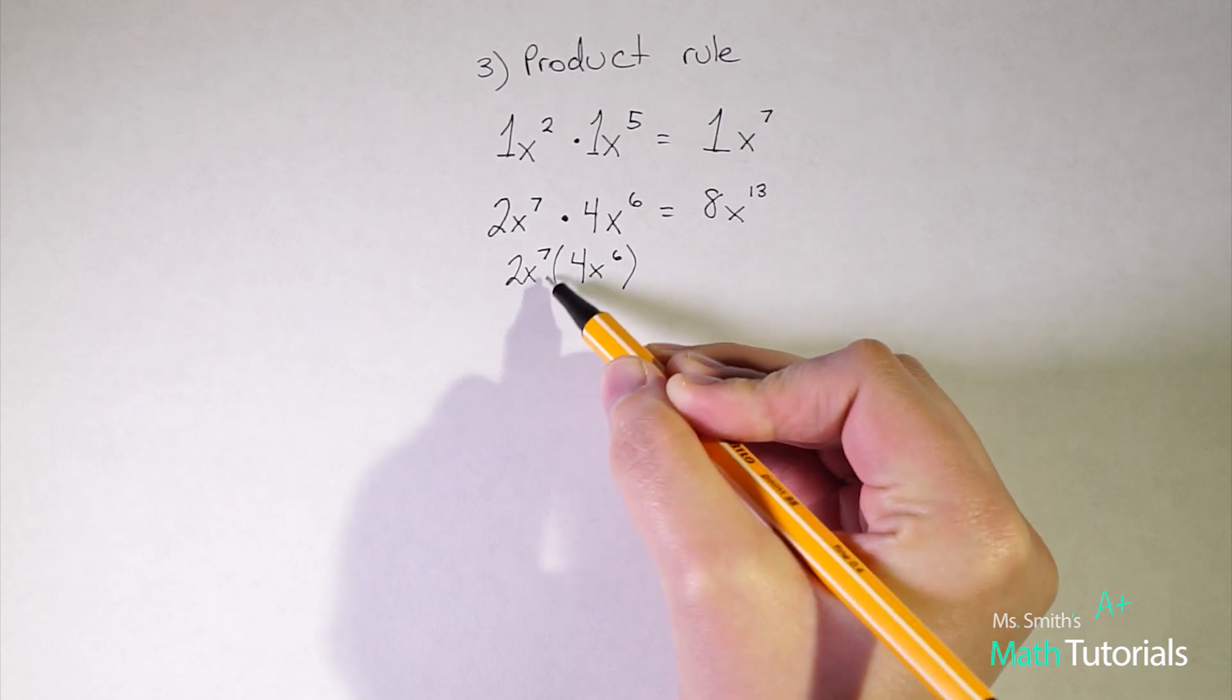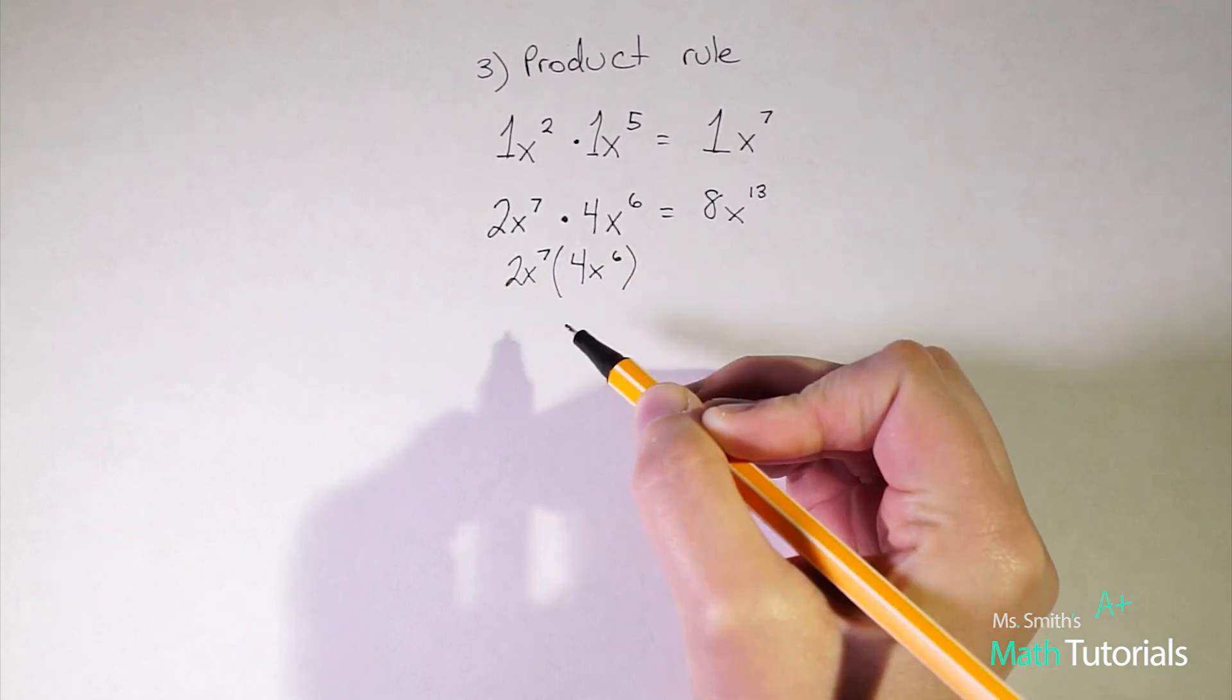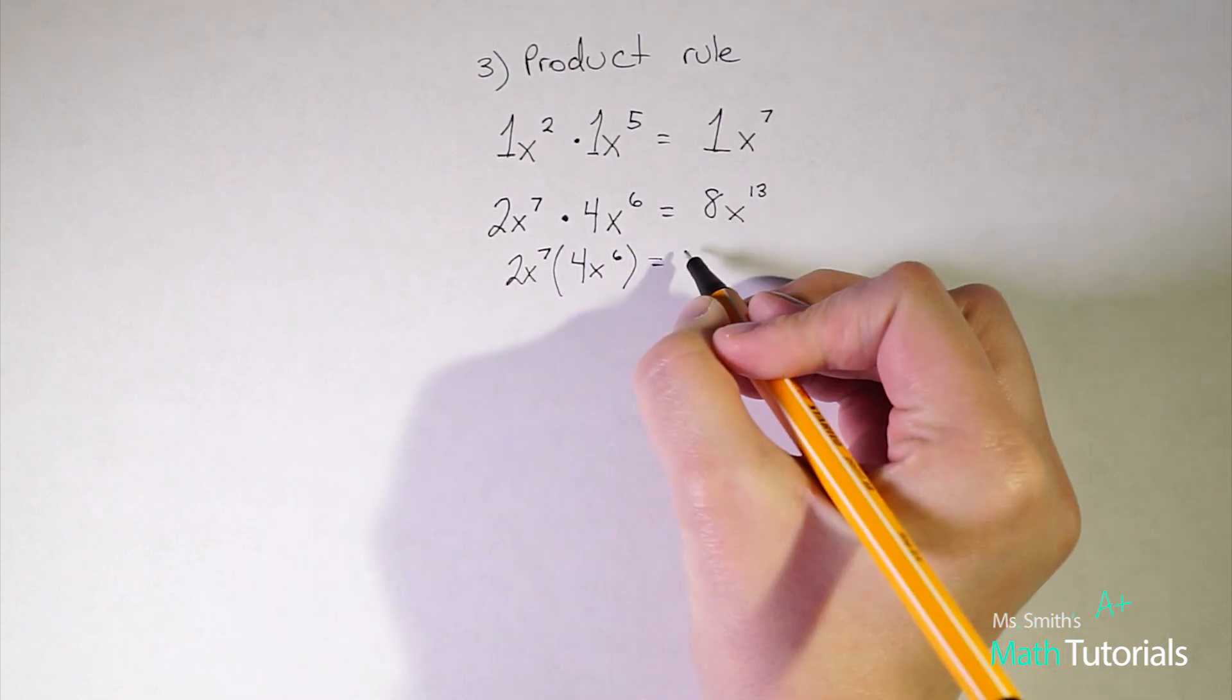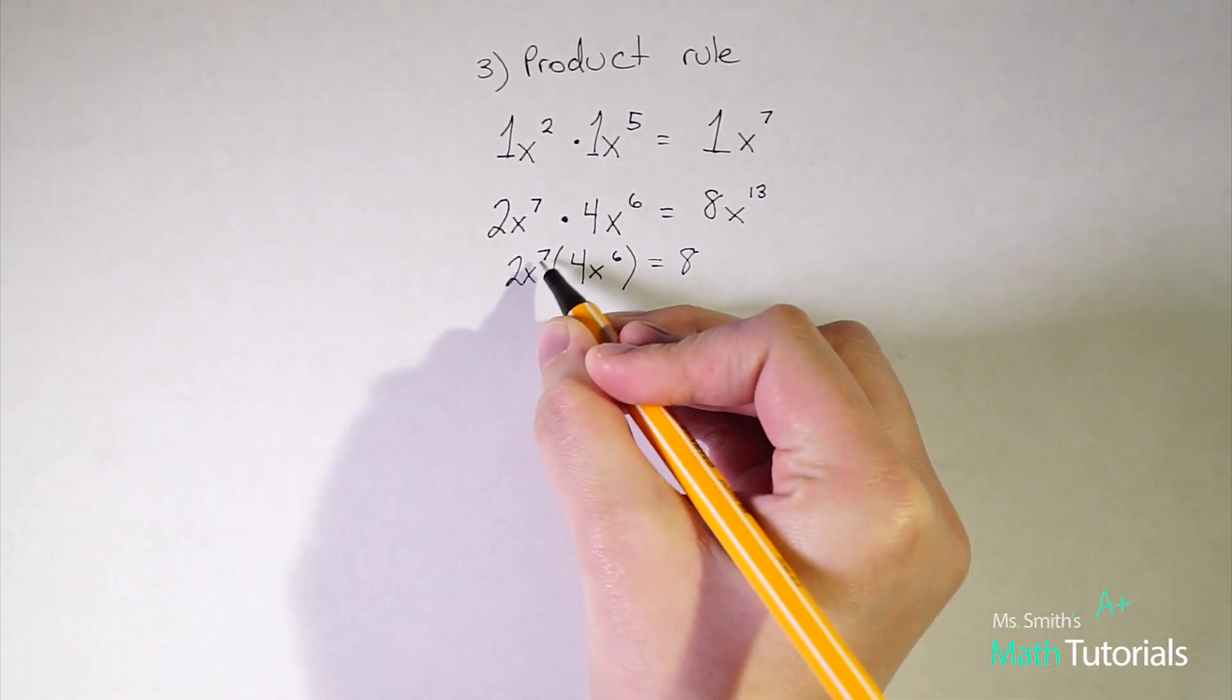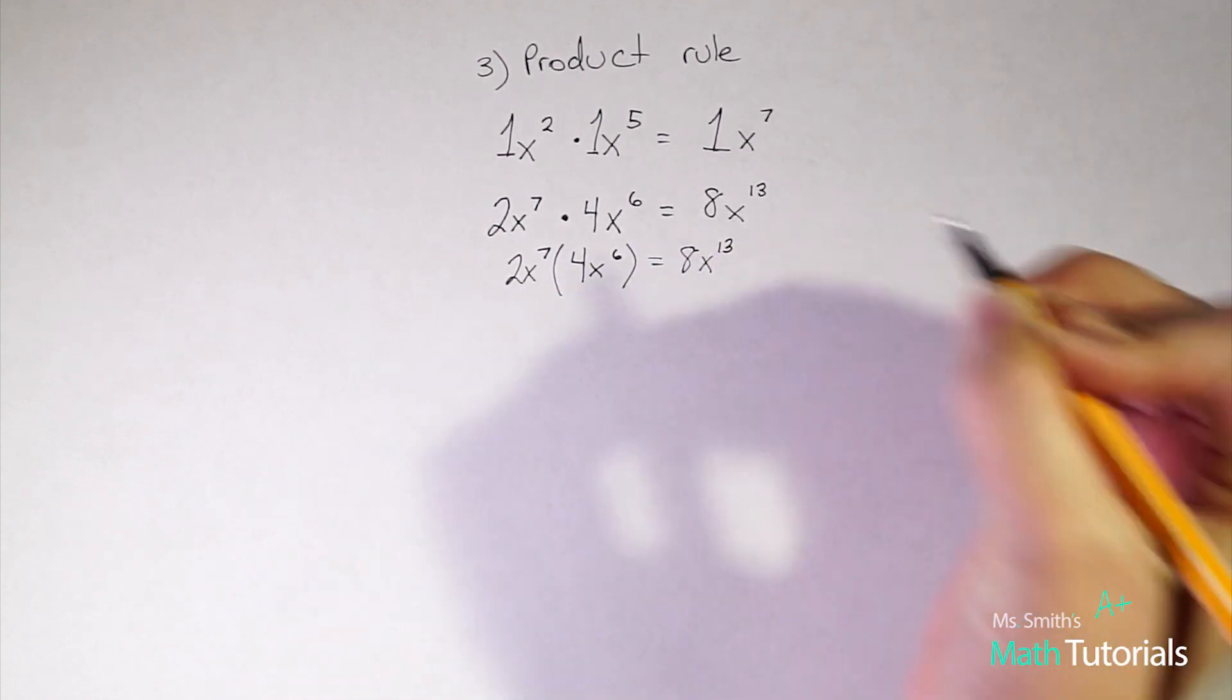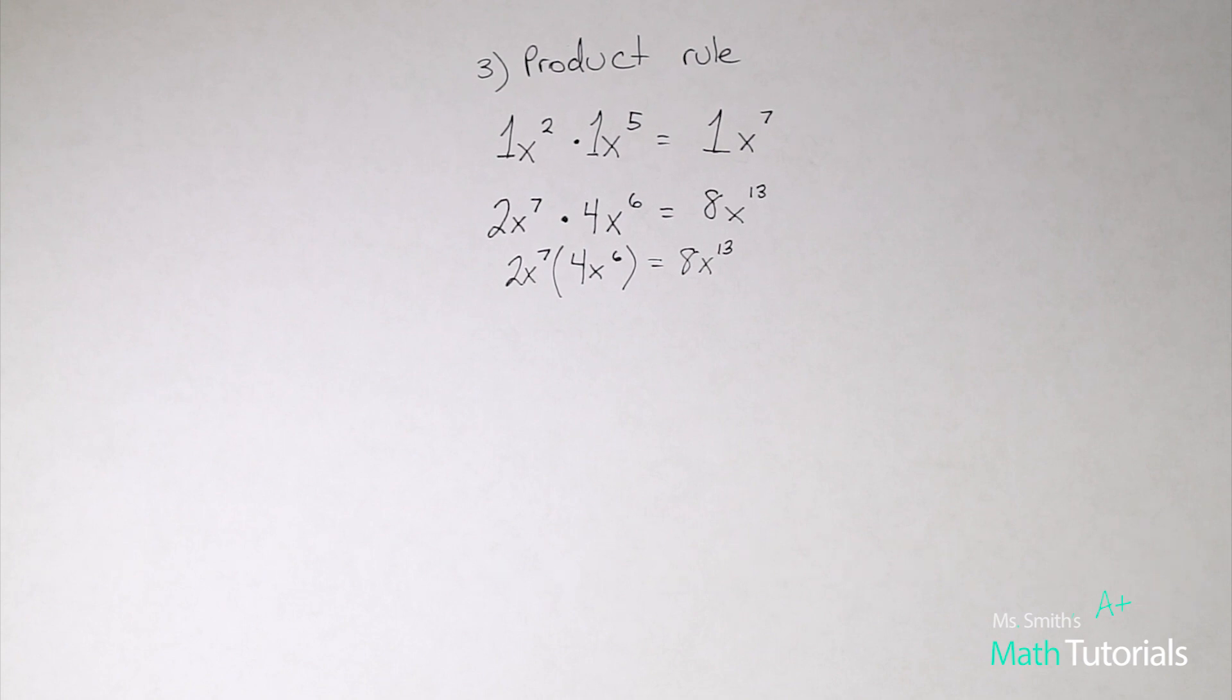So when we have something enclosed in parentheses, whatever's directly in front of it, we are multiplying. So this would work the exact same way as the above problem. Two times four is eight, x to the seventh times x to the sixth like term, so we can combine and get x to the thirteenth.